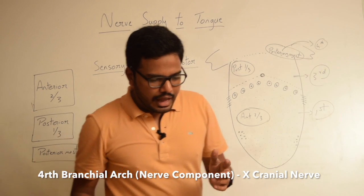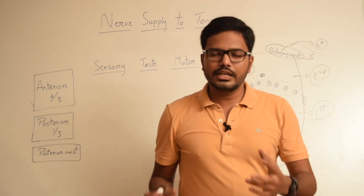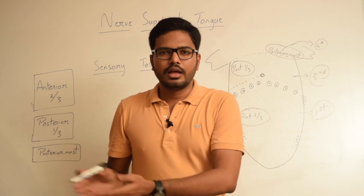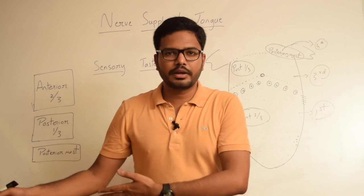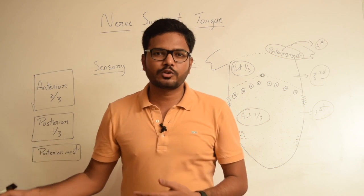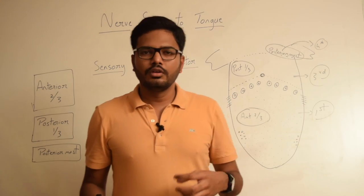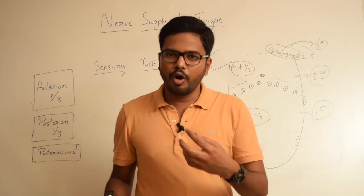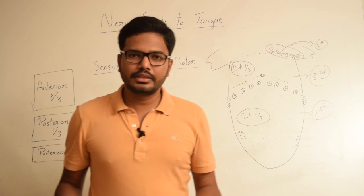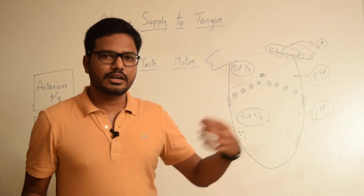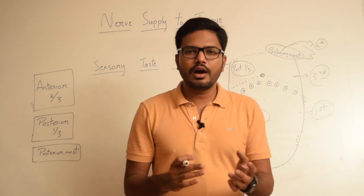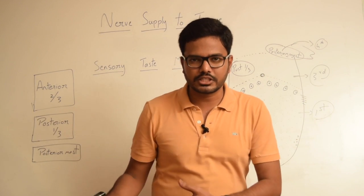As we know, each branchial arch has its own respective nerve, its own respective muscle, and its own respective blood vessel. So depending upon the origin of these parts of the epithelium from their respective branchial arches, we have different innervation.